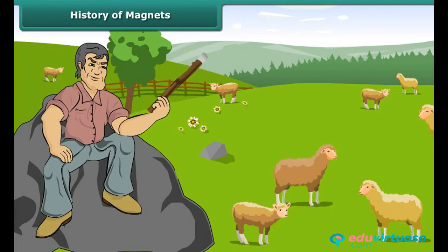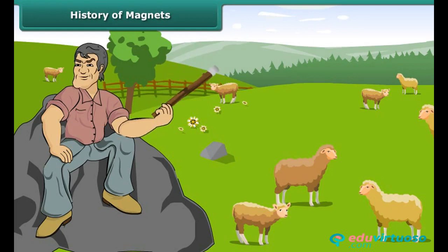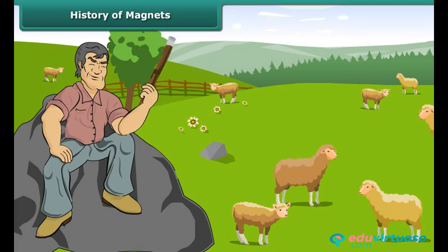There is a popular legend that leads us to the discovery of magnets, which involves an elderly Greek shepherd named Magnus. It says that Magnus was herding his sheep in an area of northern Greece called Magnesia about 4,000 years ago.